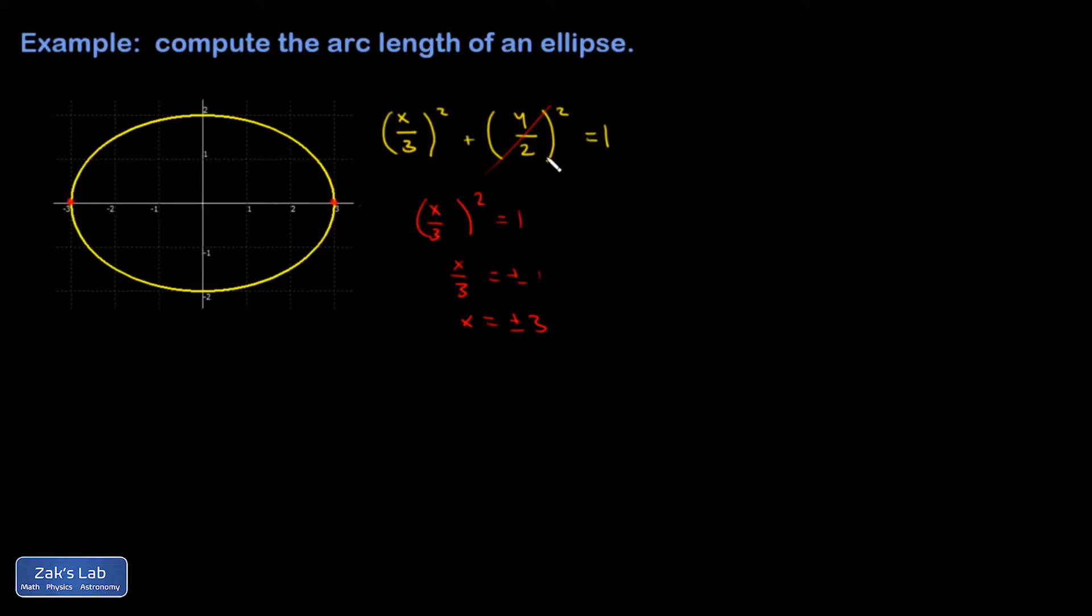You can do something similar with the y-coordinate. You go, what if x is 0? Then I would be at these points. And if I square root this and multiply by 2, I can see that y is plus or minus 2. So it's nice just to remind yourself how easily the formula for the ellipse connects to what you're seeing in the graph.